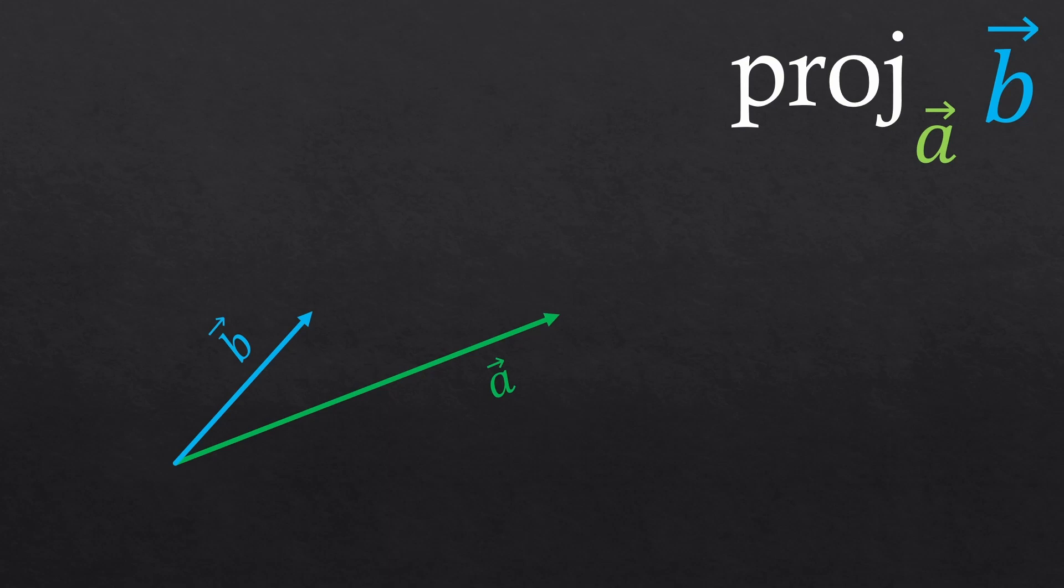Now we have two vectors pointing in different directions. We're going to shine at the vector B, so the shadow is projected on the vector A. When we project something, we're projecting in the direction perpendicular to the screen. That's the rule.